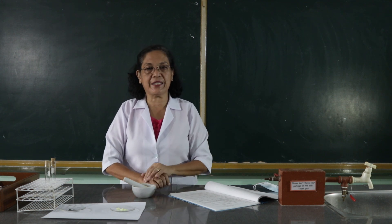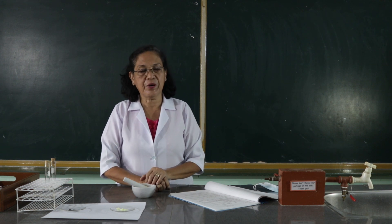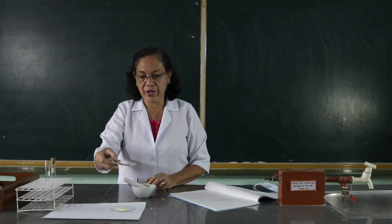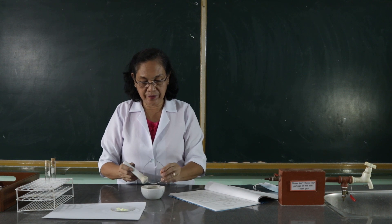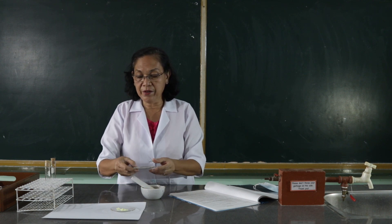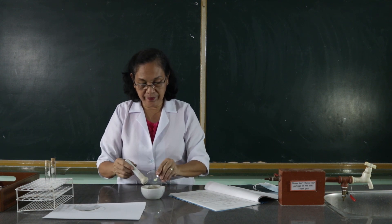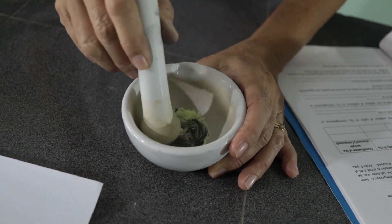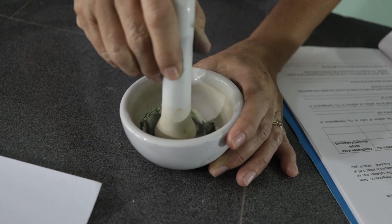The next procedure is, you are going to mix 1.5 grams of antimony with 2 grams of sulfur. So, with this antimony that we have, we're going to place this into the mortar and pestle. And we're going to mix this with the sulfur.